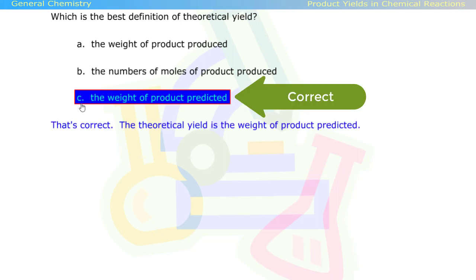If you said C, that's correct. The theoretical yield is the weight of the product predicted.